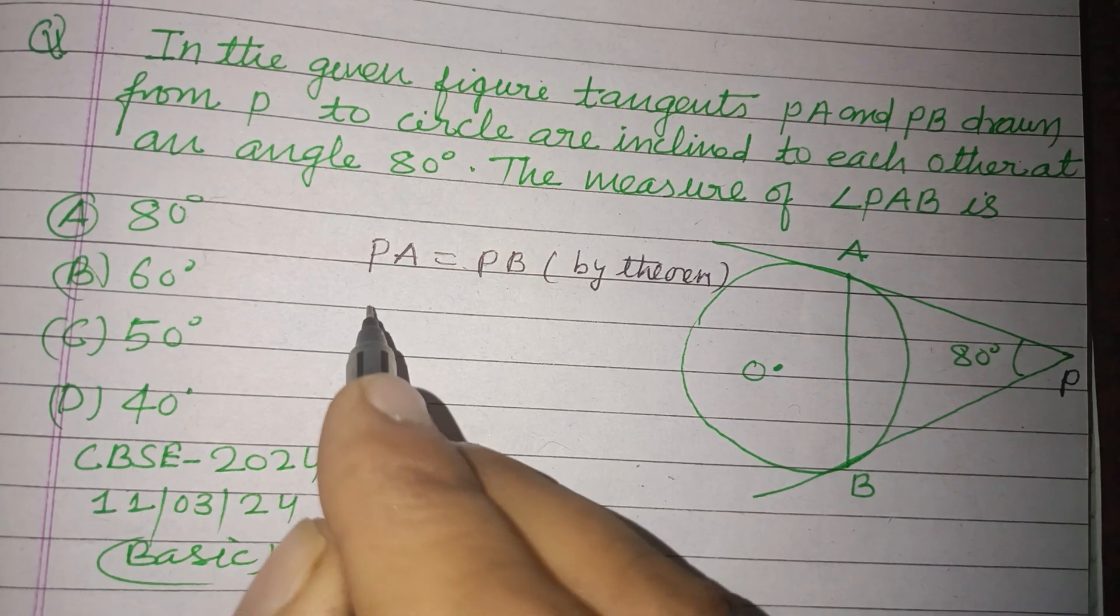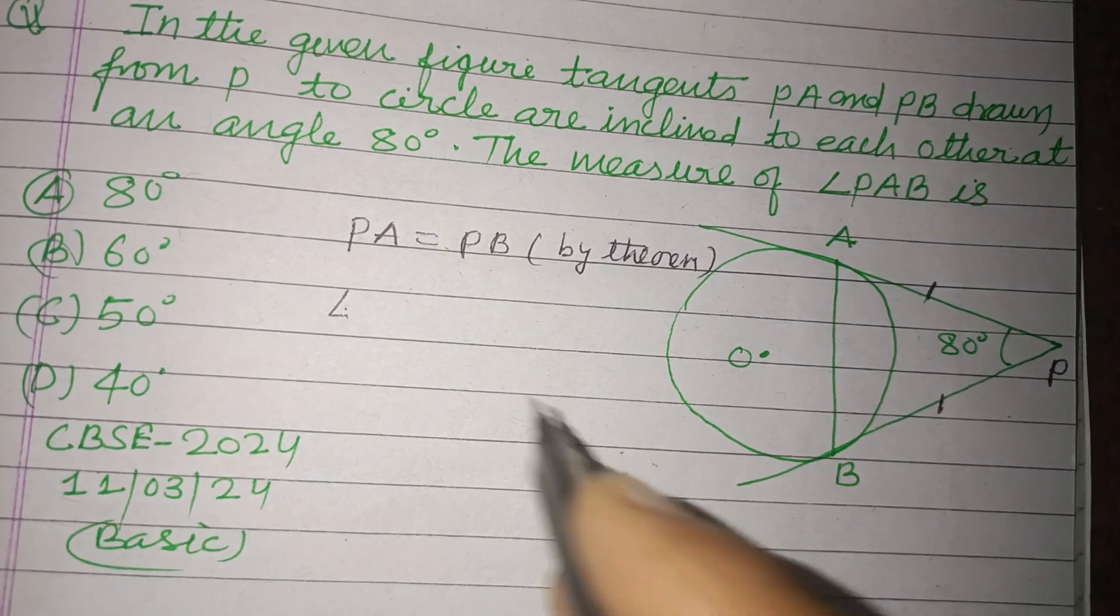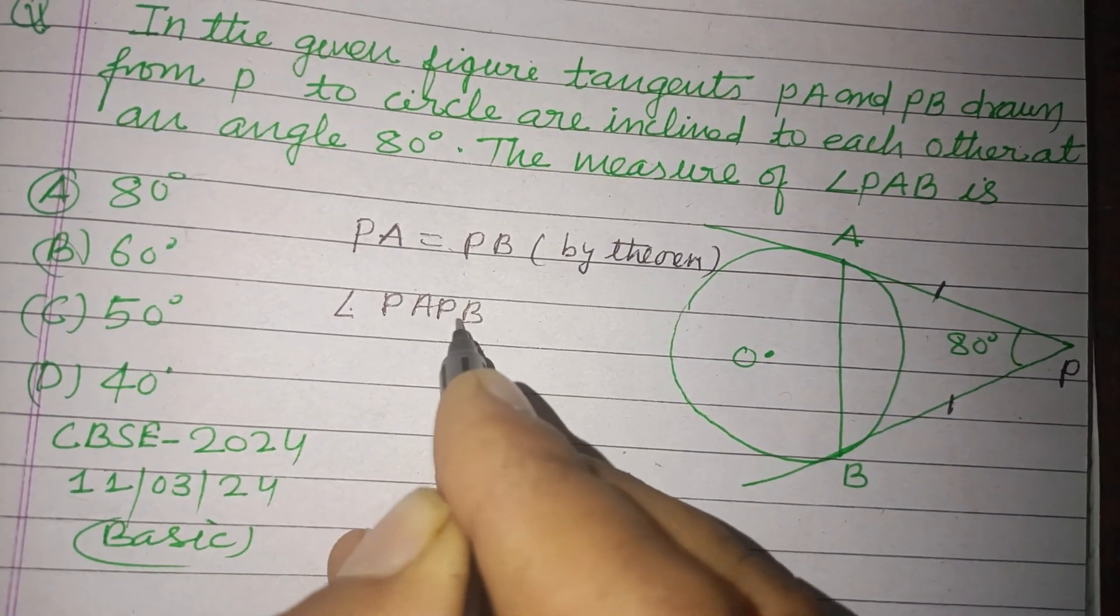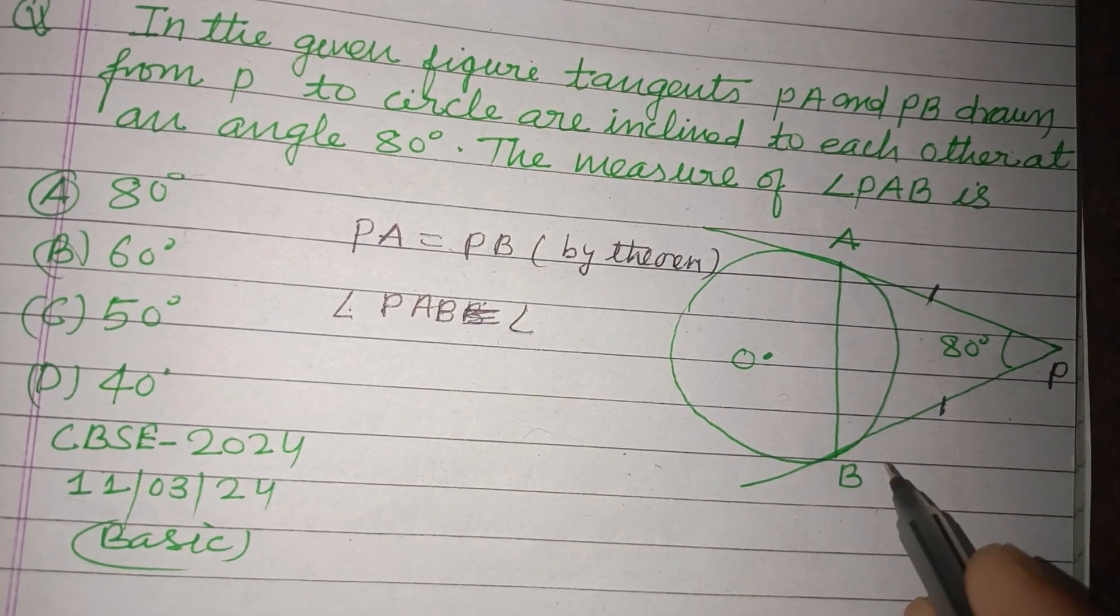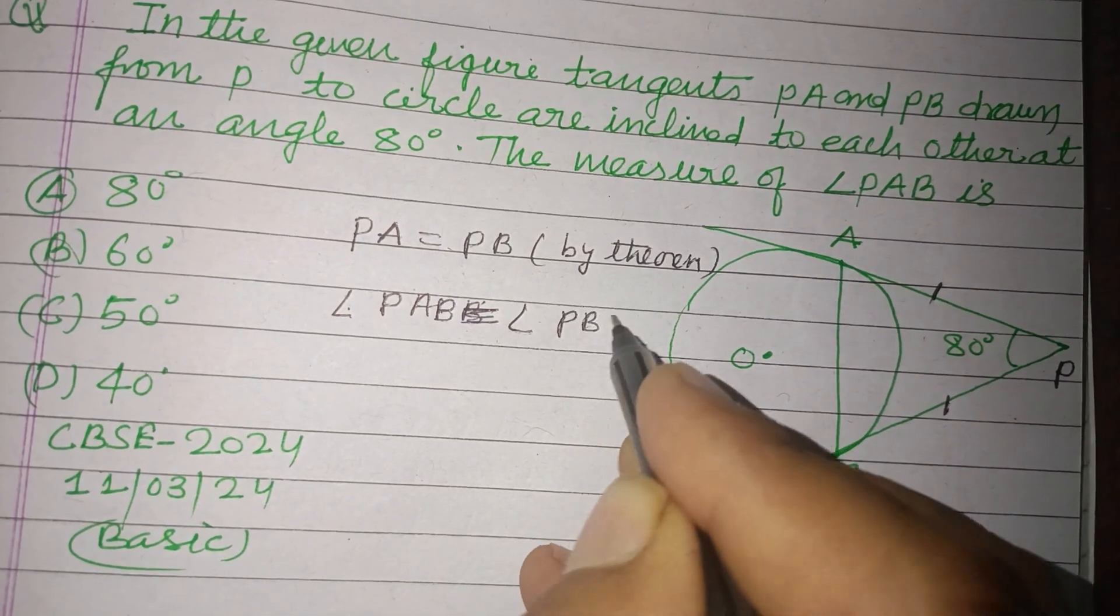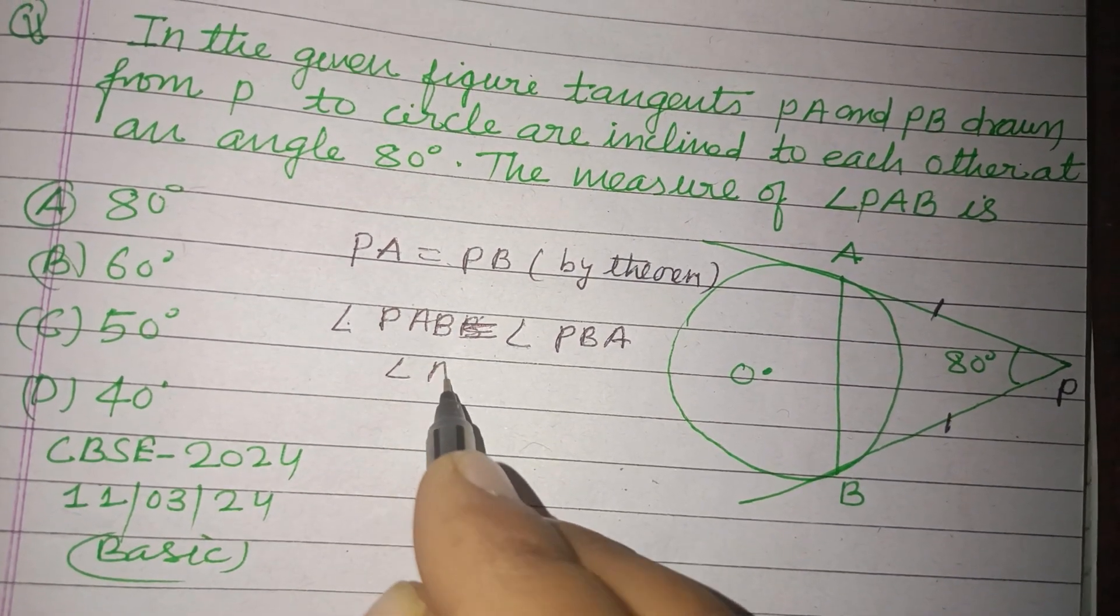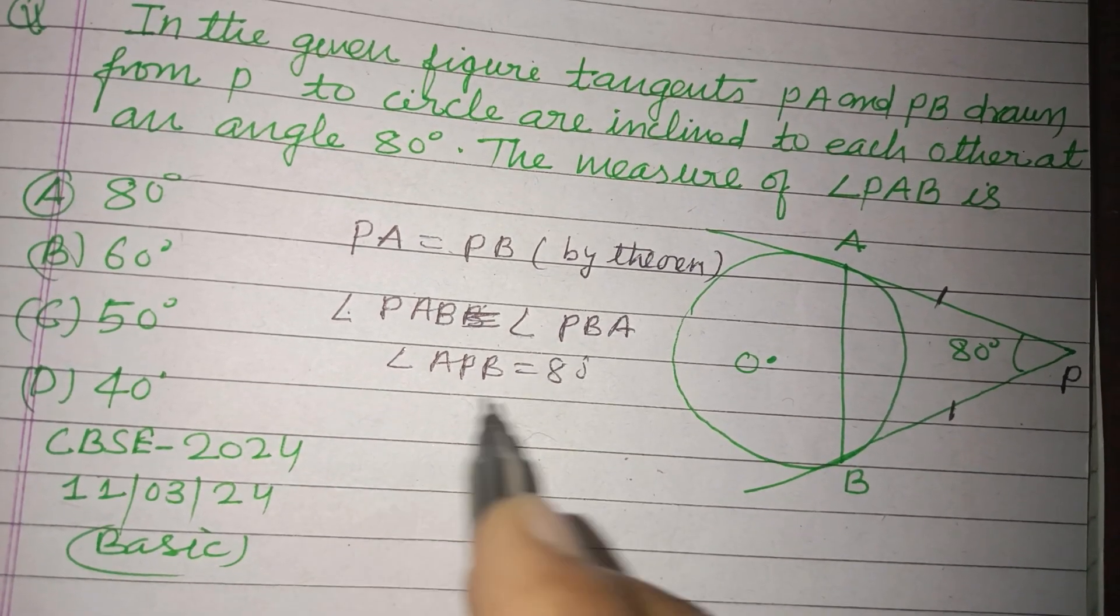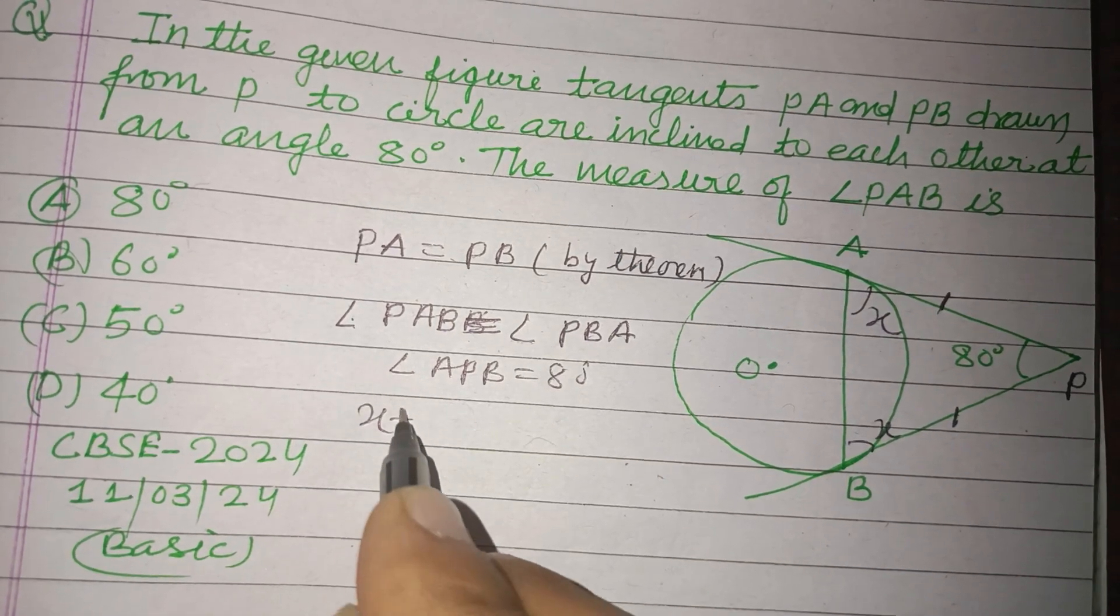Therefore, if sides are equal then their opposite angles are also equal. Therefore angle PAB equals angle PBA. And angle APB is given to us as 80 degrees. Therefore, let it be X, X, so X plus